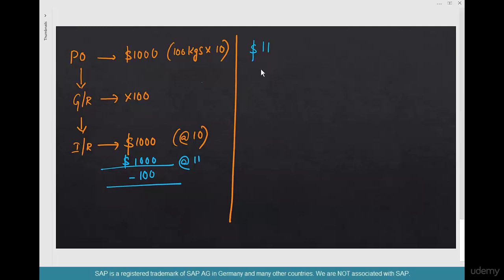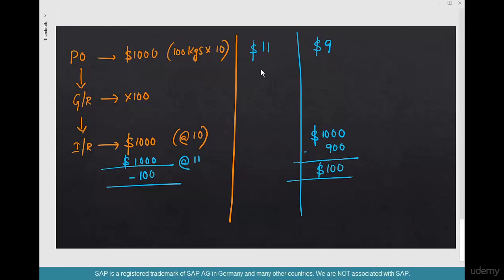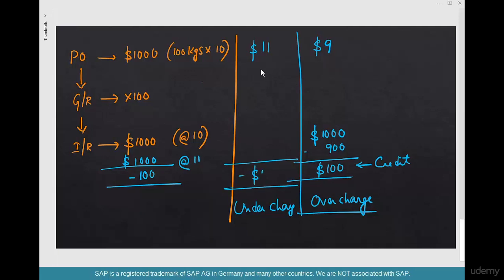In the case of undercharging, we get a debit note - a notice to pay more. In case of overcharging, say the price should have been $9 but the vendor charged $10, we paid $1000 but should have only paid $900, so we should receive a credit of $100. A credit note says the vendor needs to pay us. It's logical: if the vendor overcharges you, you get a credit; if the vendor undercharges you, you pay money back.